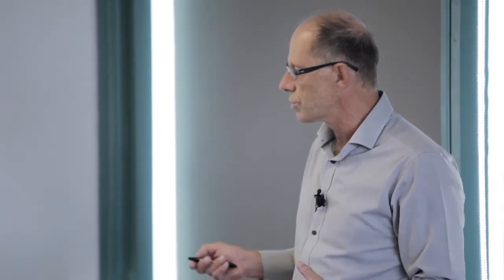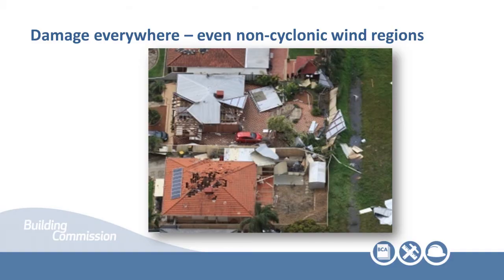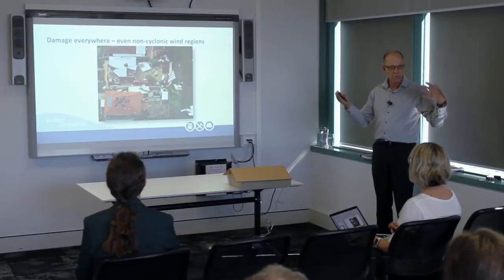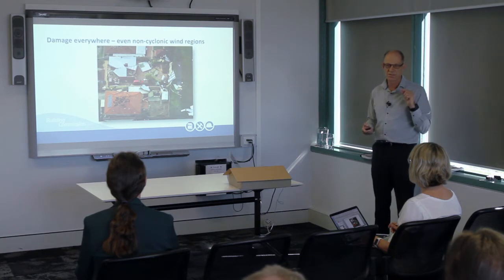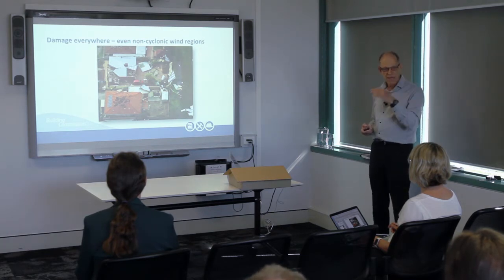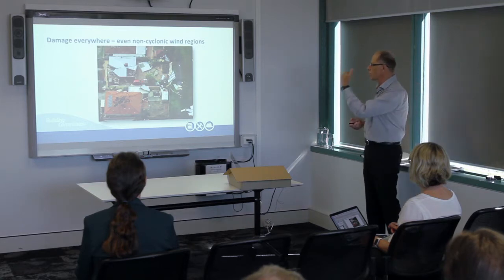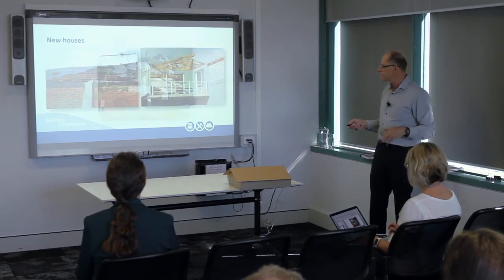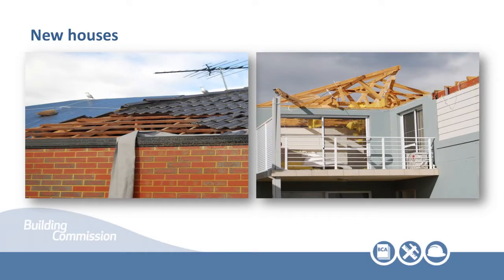We've seen debris in cyclones and in non-cyclonic events. We've seen doors blow in during cyclonic and non-cyclonic events. Damage happens to buildings in all regions of the country. These are some photos from Perth, and you can see it's not particularly selective as to whether it's a steel or tile roof — damage does happen with the uplift. This event was less than the design wind event, so these failures shouldn't have happened. The same thing has happened to brand new buildings — both of these were less than two years old, and the wind event was still less than the design wind event.